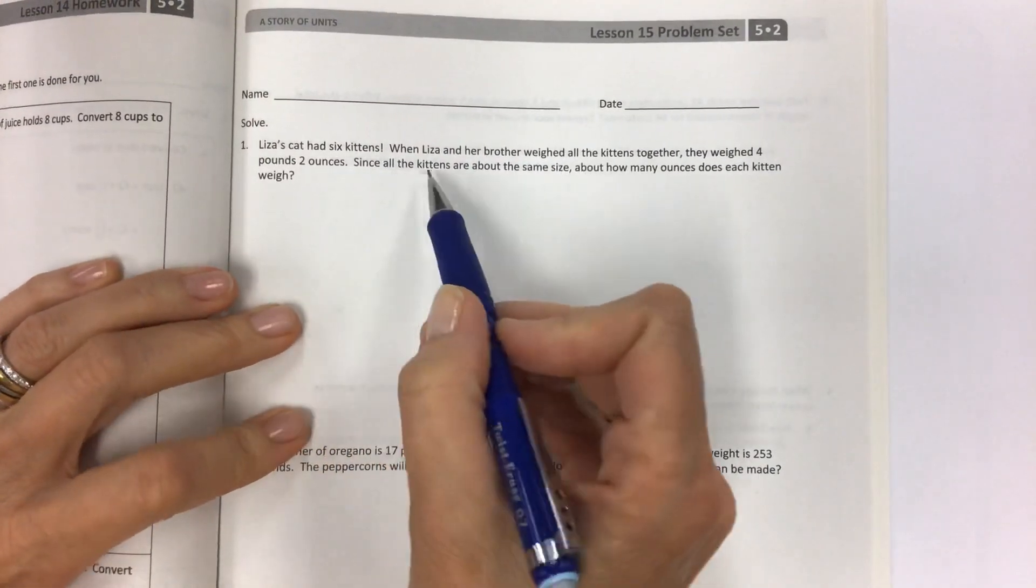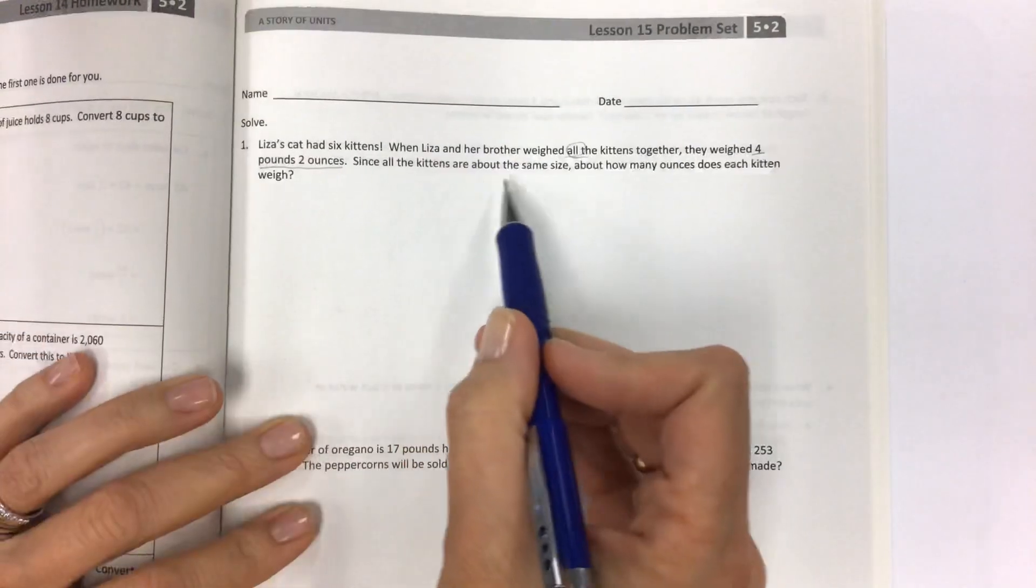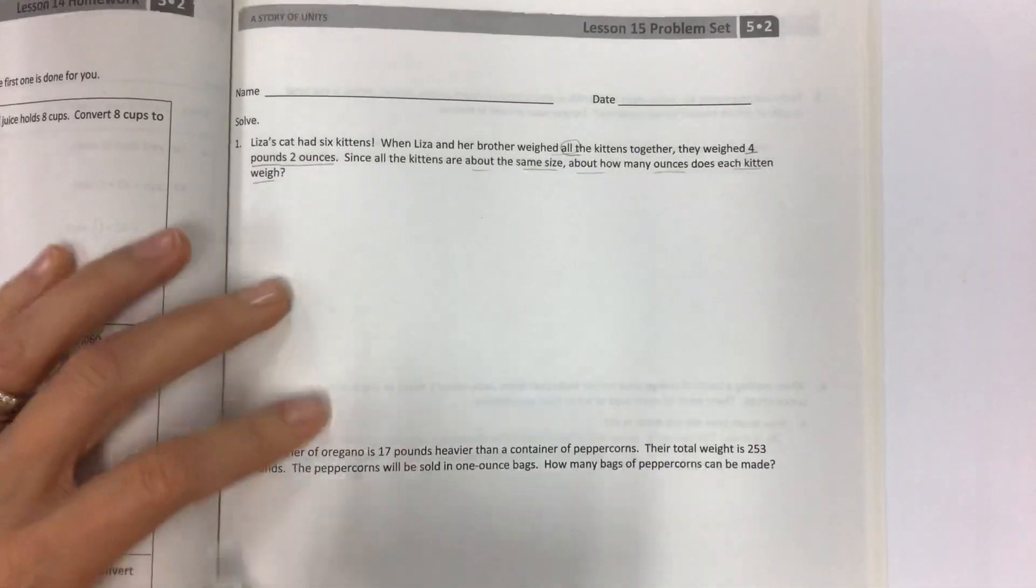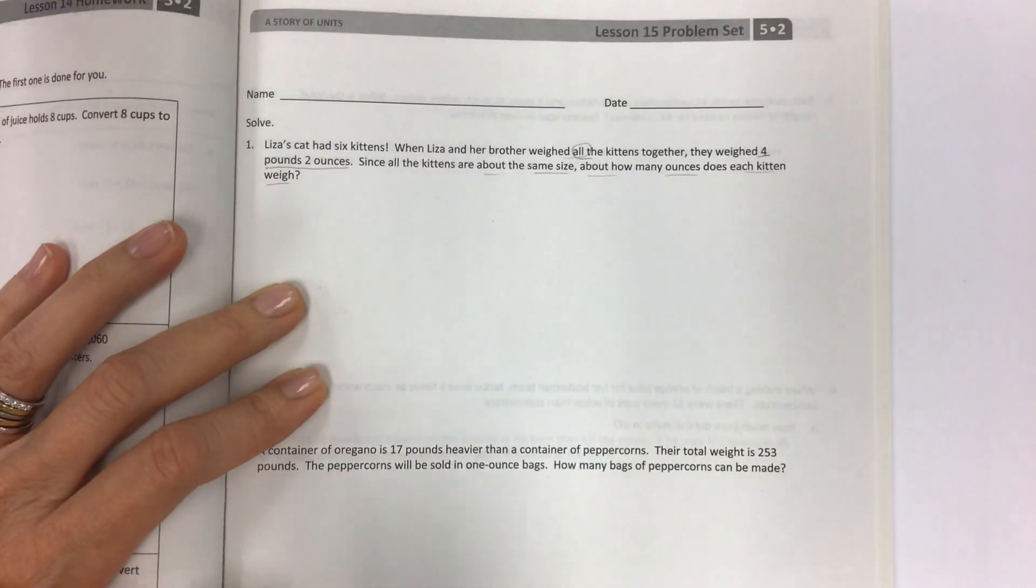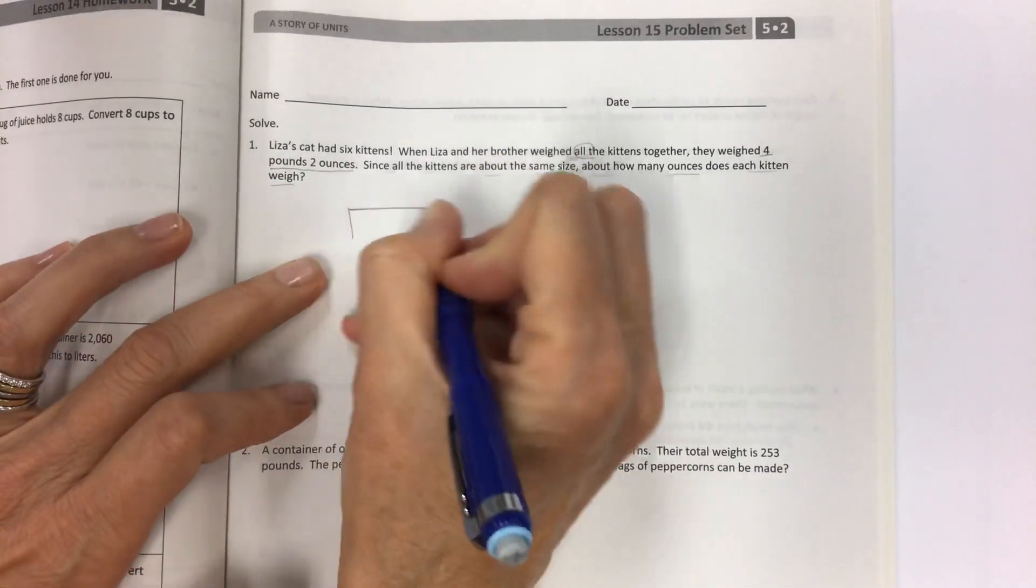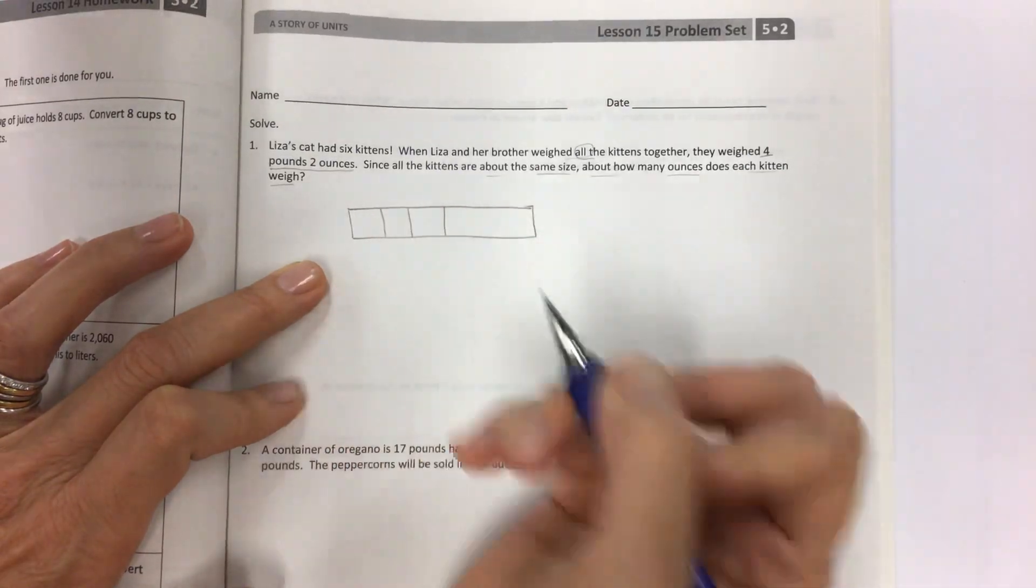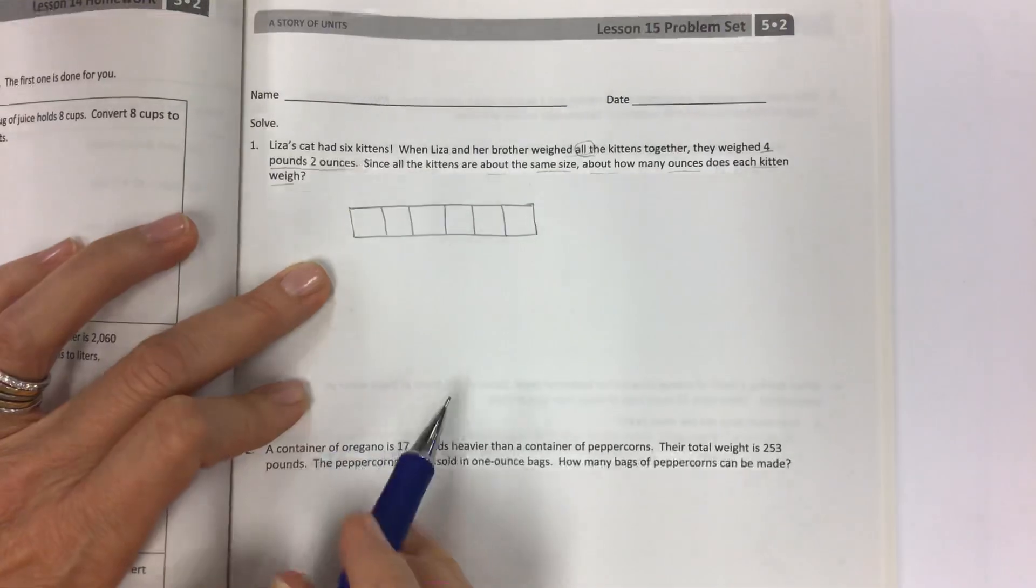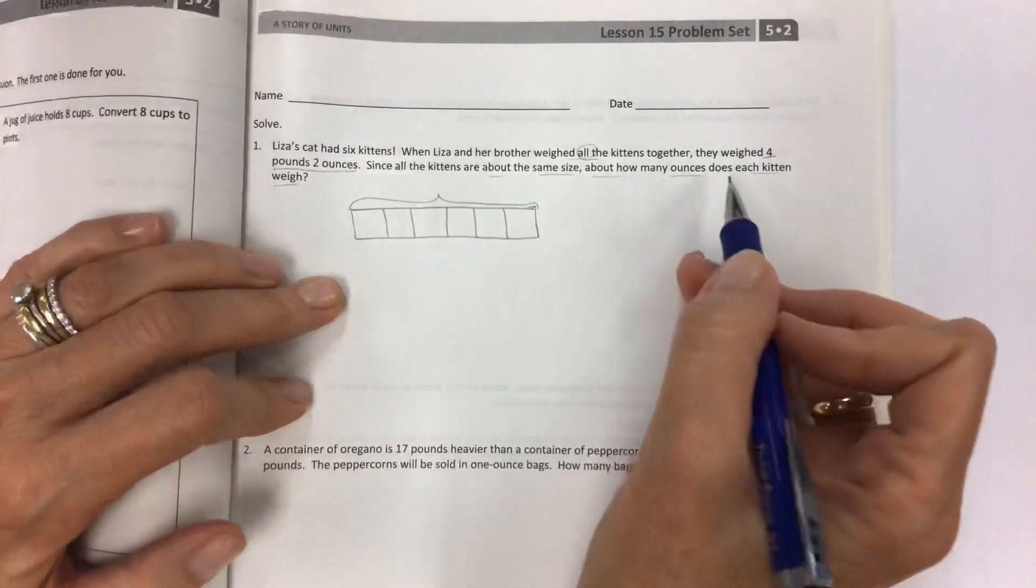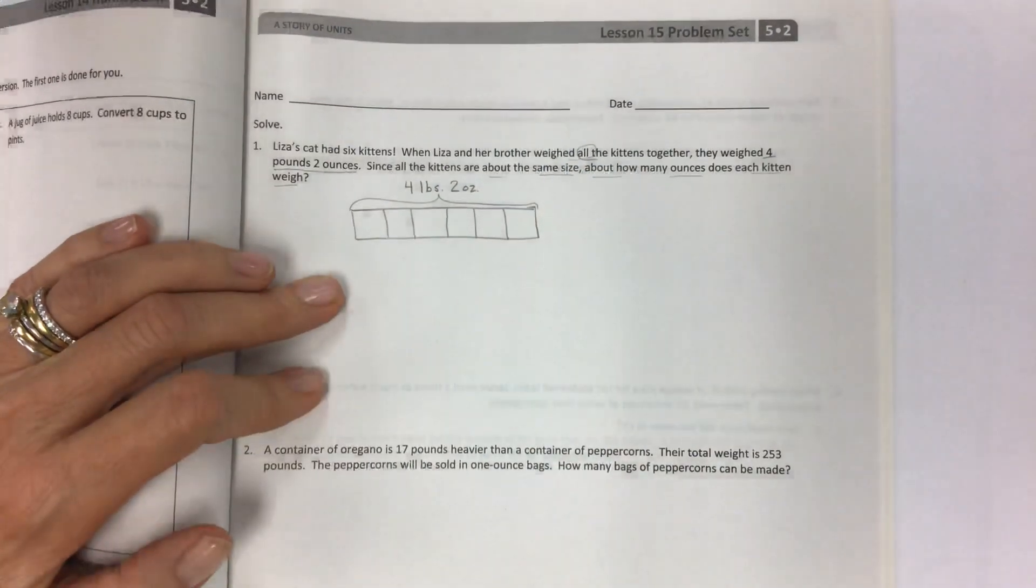So Liza's cat had six kittens. When Liza and her brother weighed all the kittens together, they weighed four pounds, two ounces. Since all the kittens are about the same size, how convenient, about how many ounces does each kitten weigh? So first of all, I'm going to be using tape diagrams to kind of help you put a picture together. So it's all about that read, draw, write strategy. So I'm going to make a tape diagram that's big enough for six kittens.